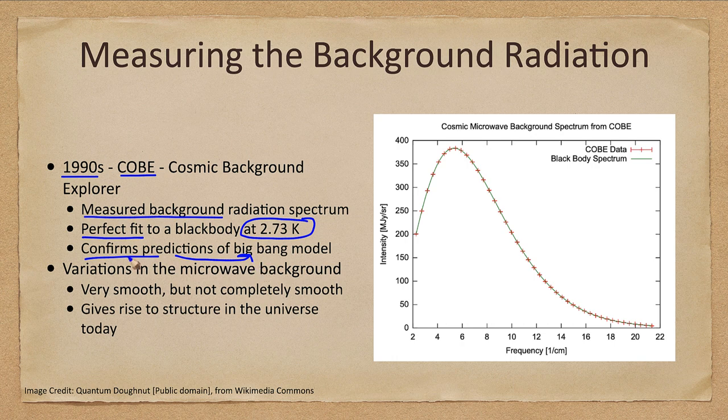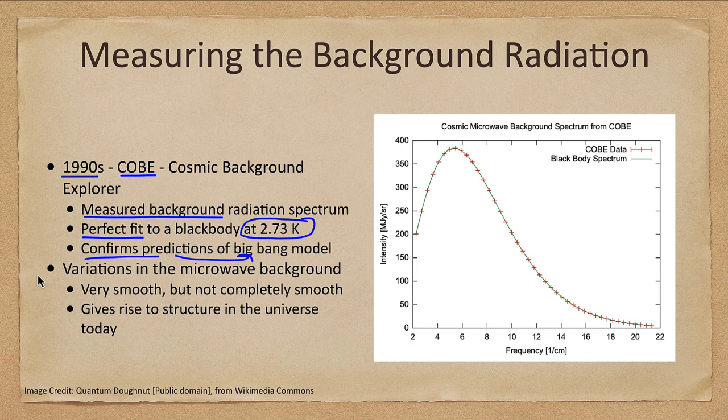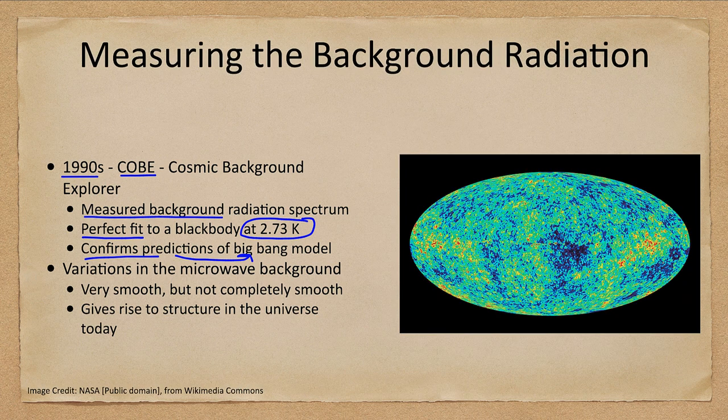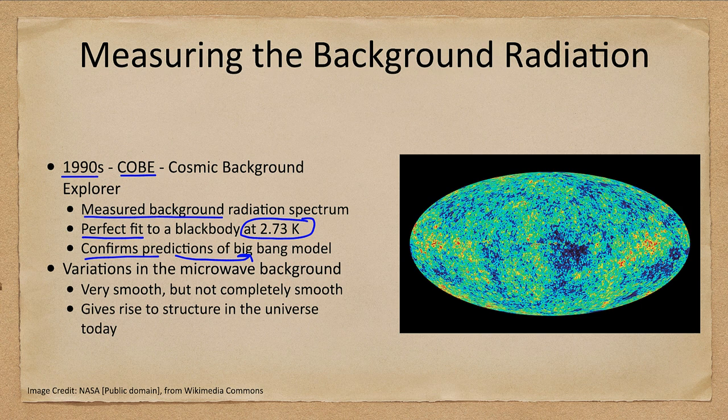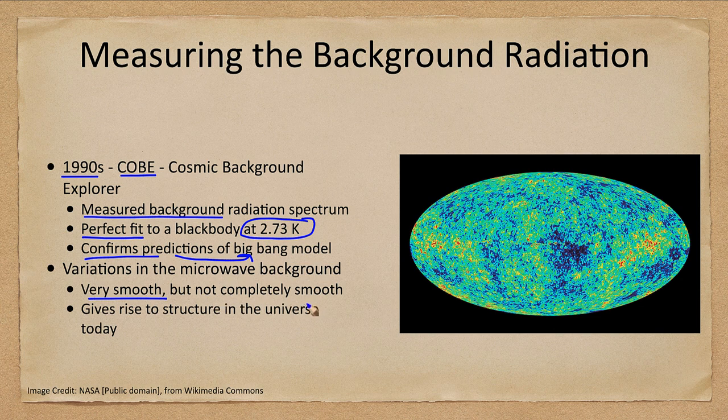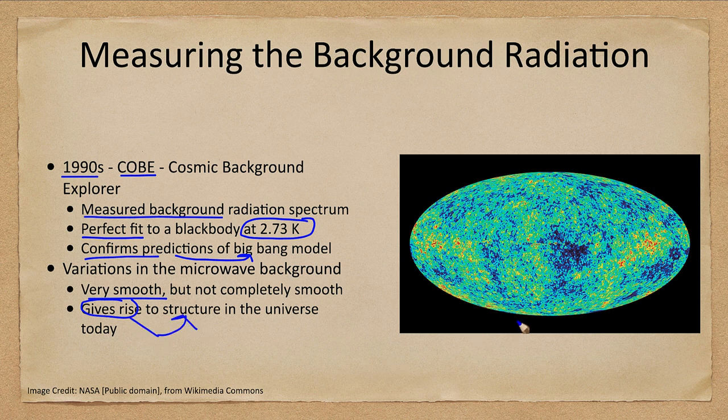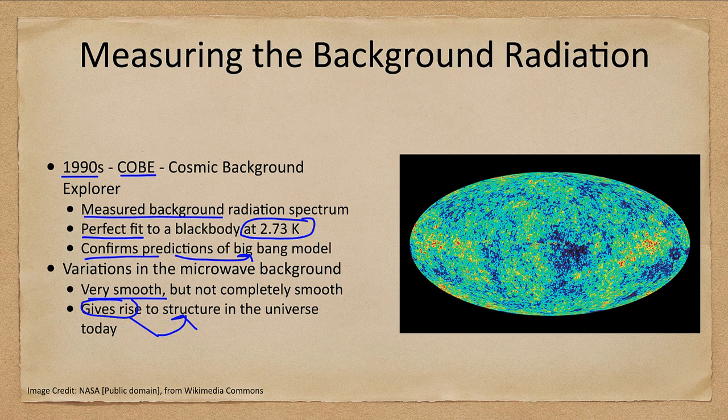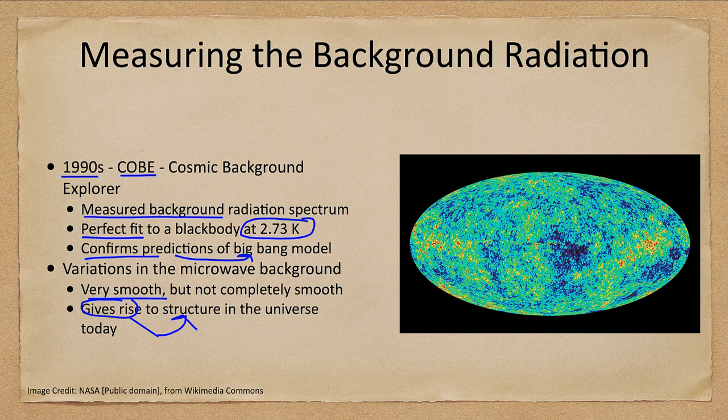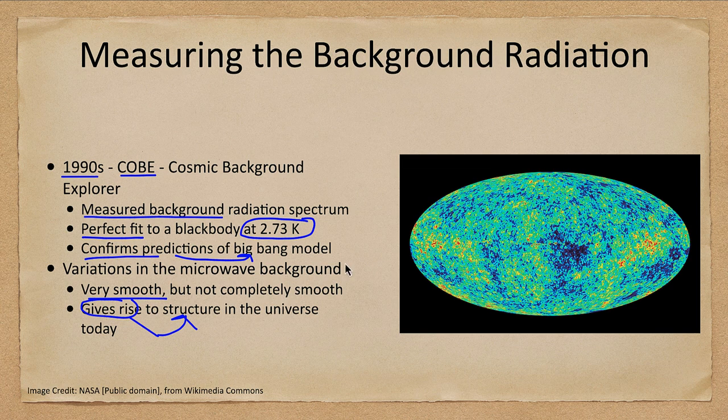We do see some variations. When we've looked at this in more detail, we've been able to see that there are variations. This was measured by the Planck satellite that was set up to measure the background in more detail. It's very smooth, but not completely smooth. This is what gives rise to the structures that we see in the universe today. Remember, that's 2.73 degrees. The variations we're seeing here from the brightest reds to the darkest purples are only a tiny fraction of that—thousands, ten-thousandths of a degree in variation of temperature. There are some variations; they are extremely small.